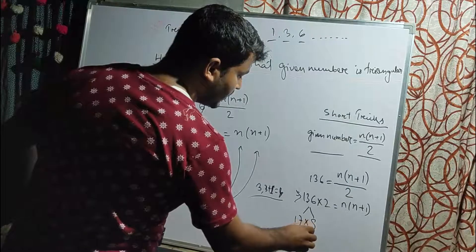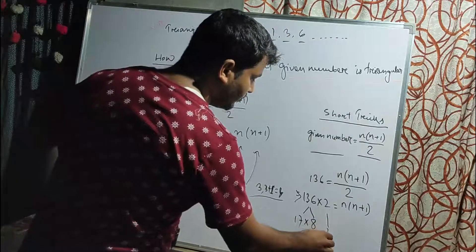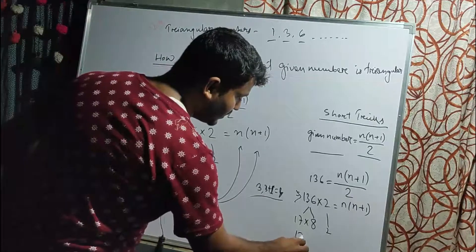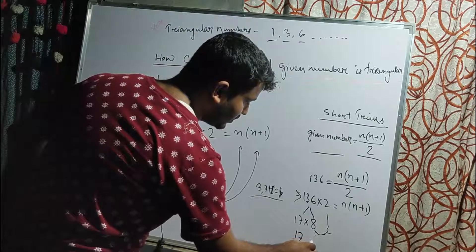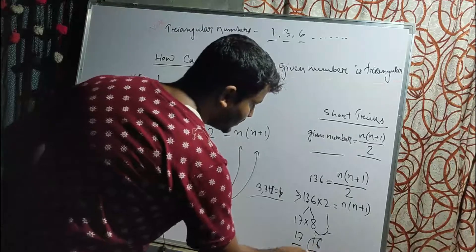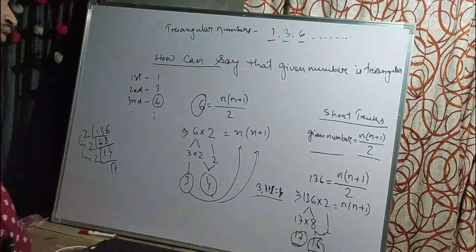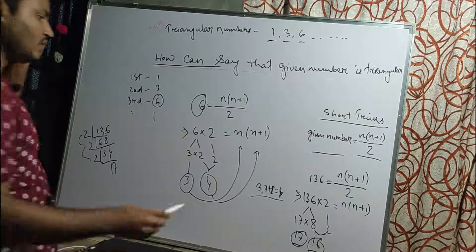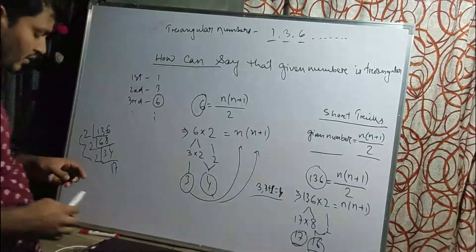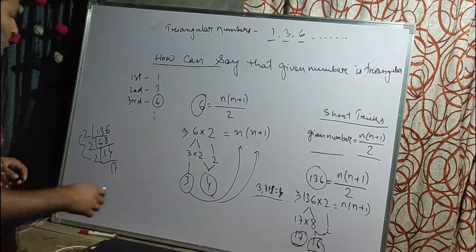We bring back the factor of 2: 17 multiplied by 16 gives consecutive numbers 16 and 17. These are consecutive numbers, so we can say that 136 is a triangular number.